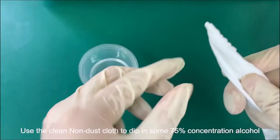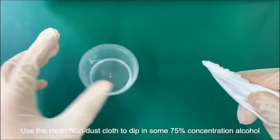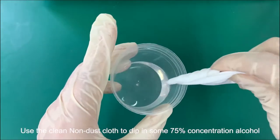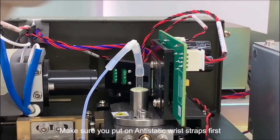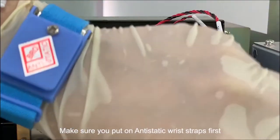Use a clean non-dust cloth to dip in some 75% concentration alcohol. Make sure you put on anti-static wrist straps first.